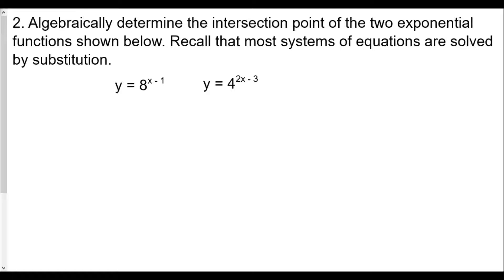Question: algebraically determine the intersection point of the two exponential functions shown below. Recall that most systems of equations are solved by substitution. We have y equals 8 raised to (x minus 1) and y equals 4 raised to (2x minus 3). Since they're both equal to y, we'll begin by setting 8 to the (x minus 1) equal to 4 to the (2x minus 3).